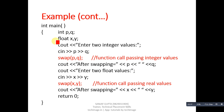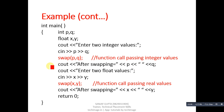cout will display the message 'enter two integer values' on the console, cin will read values into p and q, then the swap function is called with arguments p and q. Since we are passing integer values, this function call will automatically call the definition that receives two arguments of integer type. Then after swapping, the results will be displayed.